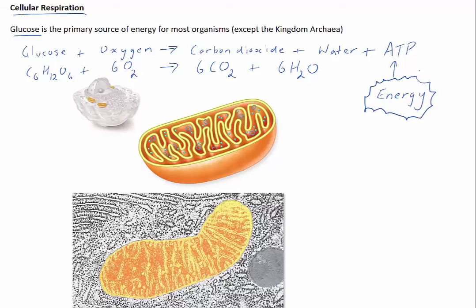In eukaryotic cells, the first stage of cellular respiration takes place in the cytoplasm. The final stages occur in mitochondrion.